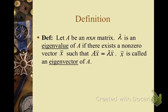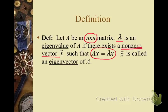Let's say that we have some matrix A and it is square, so it's n by n. Then lambda is an eigenvalue if there is a nonzero vector x — this is a very important thing to keep in mind, the vector has to be nonzero — such that A times x equals lambda times x. Lambda is a scalar quantity; it is not a matrix.